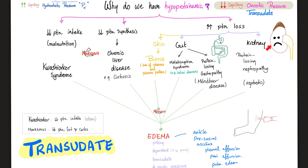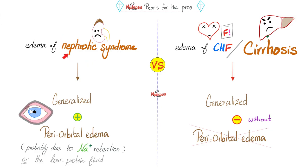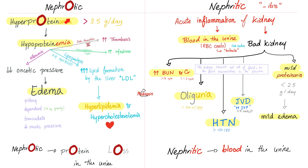Does nephrotic syndrome cause edema? Of course — it's because of decreased protein in the blood, because you have increased protein in the urine. The edema of kidney disease usually has periorbital swelling, but the edema of cirrhosis and CHF usually does not. Nephrotic syndrome has four features: high protein in the urine, low protein in the blood, edema, and hyperlipidemia. Nephritic syndrome features: hypertension, hematuria, jugular venous distension, oliguria, mild edema, proteinuria, and azotemia.